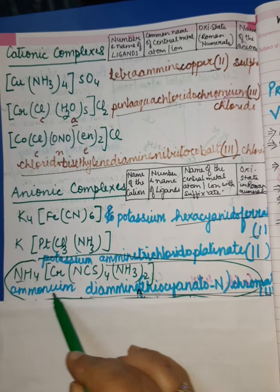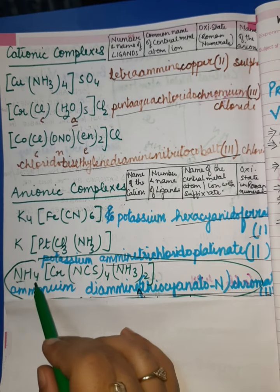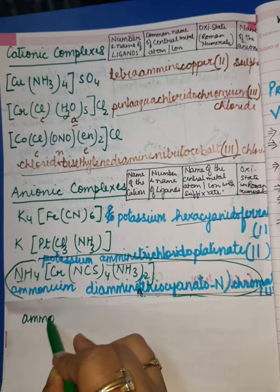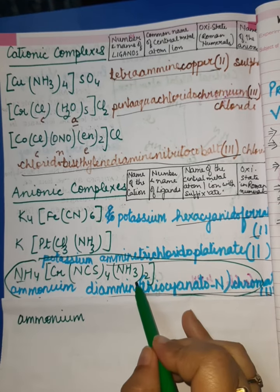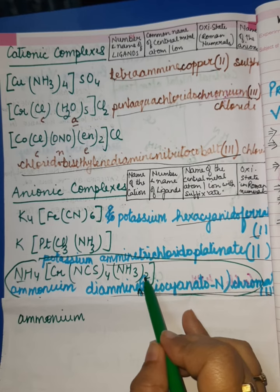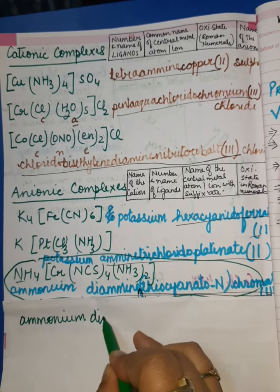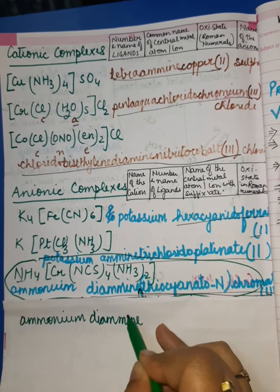Name of the cation first, so I'll write here ammonium as it is, then followed by the name of the cationic complex part where the name of amine comes first. So it will be diamine. We understand the reason why diamine - because amines are two in number.